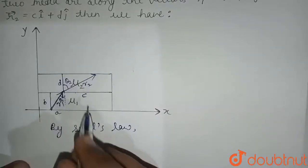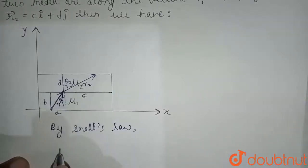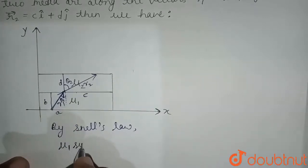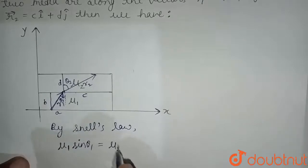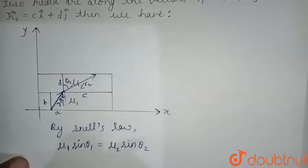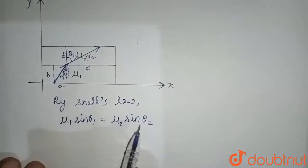Here the refractive index is μ₁ and the angle is θ₁, so μ₁ sin θ₁ equals μ₂ sin θ₂. This is Snell's law. Now we'll find the value of sin θ₁ and sin θ₂.